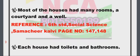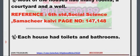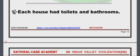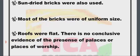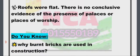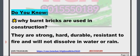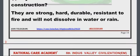Most of the houses had many rooms, a courtyard, and a well. Each house had toilets and bathrooms. The houses were built using baked bricks and mortar; sun-dried bricks were also used. Most of the bricks were of uniform size and roofs were flat. There is no conclusive evidence of the presence of palaces or places of worship.